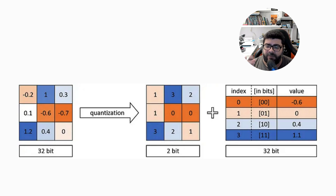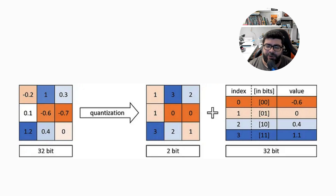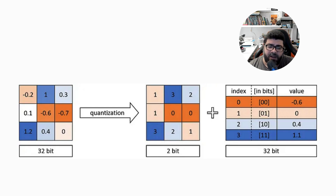Here is a sample of how quantization works. On the left you have a matrix of numbers, and there is a map where each integer in the map points to a floating point number. This way you can quantize the float point numbers in a matrix to integer numbers. And with this map you can also undo the quantization — it is reversible.